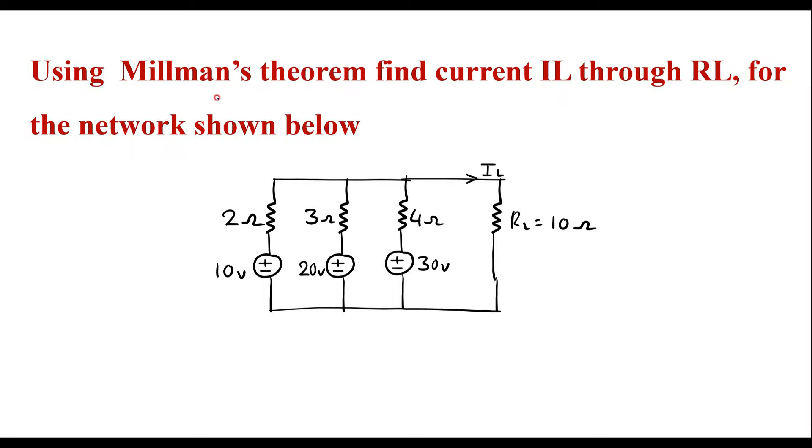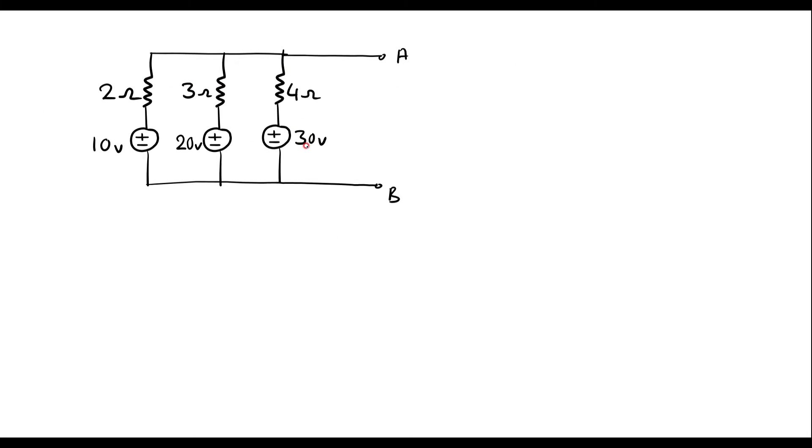To find the current using Millman's theorem, first we are supposed to remove this load resistor from the circuit. Let me remove this RL. Once we remove this RL, these two terminals will become open. So the circuit will look like this.